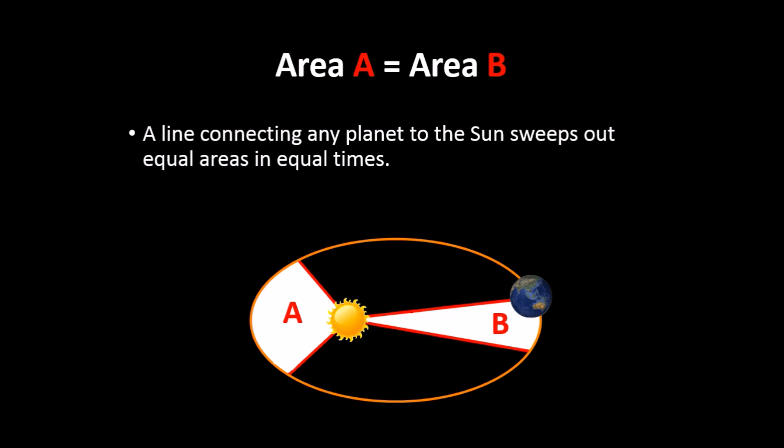This happens not just for the Earth, but for all the other planets as well. A line that connects a planet to the sun sweeps out equal areas in equal intervals of time. The speeds of the planets are not constant, but this area is.